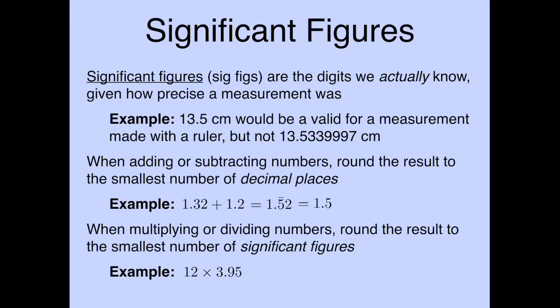When multiplying or dividing numbers, you round the result to the smallest number of significant figures. For example, 12 times 3.95: the number 12 has two significant figures, 3.95 has three. So we round to two significant figures. The calculator gives 47.4, but we round to 47. Keep these rules in mind anytime you make a calculation or measurement.